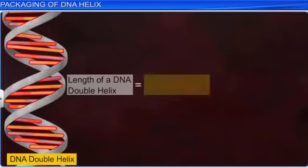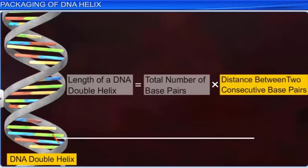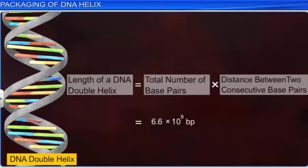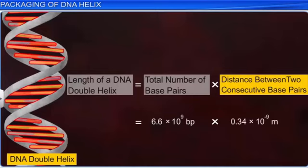This length is obtained by multiplying the total number of base pairs present in the DNA double helix with the distance between two consecutive base pairs. The total number of base pairs in a typical mammalian cell is 6.6 × 10⁹, and the distance between two consecutive base pairs is 0.34 nanometers, or 0.34 × 10⁻⁹ meters. By multiplying these two factors, we get the length of the DNA double helix as 2.2 meters.